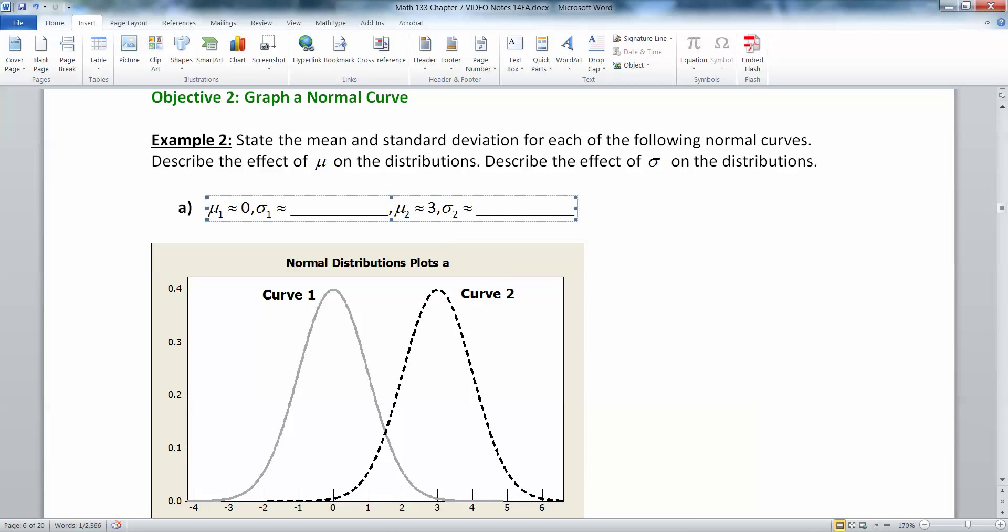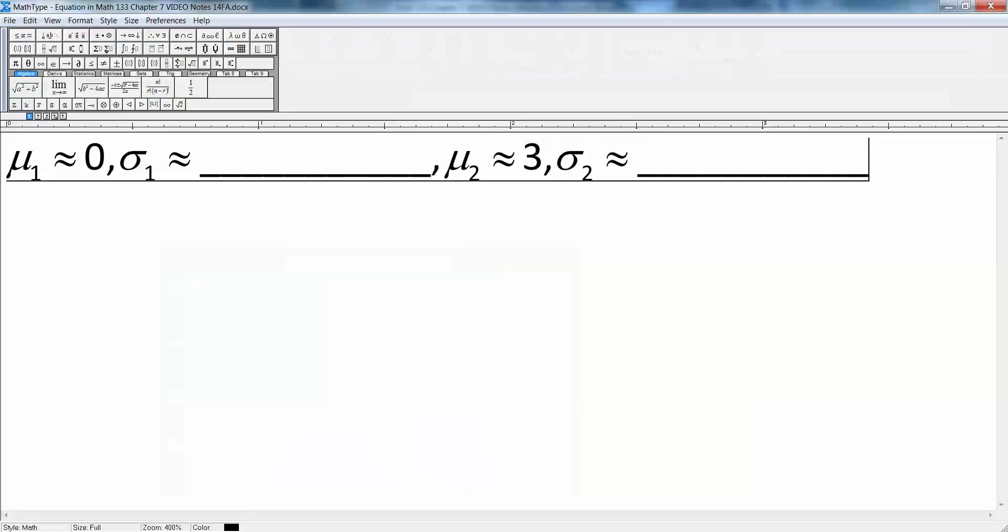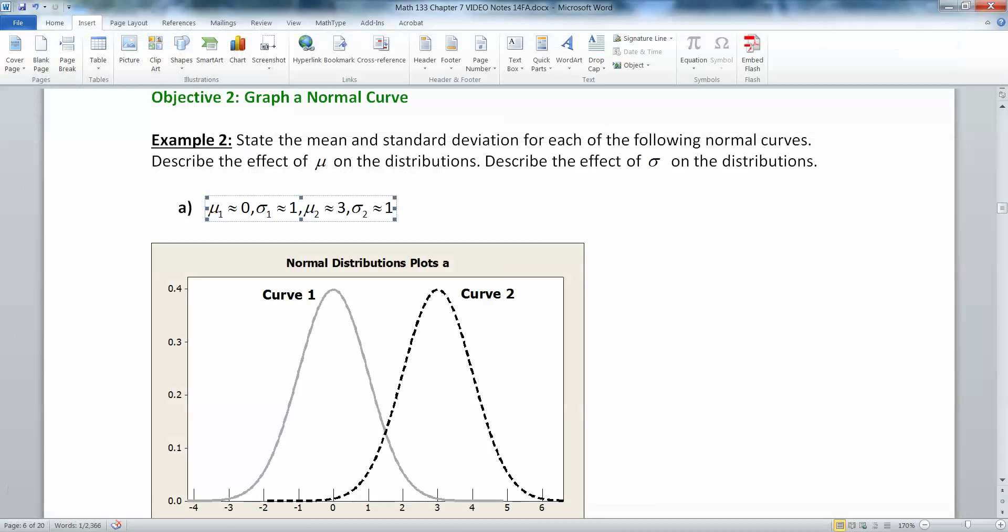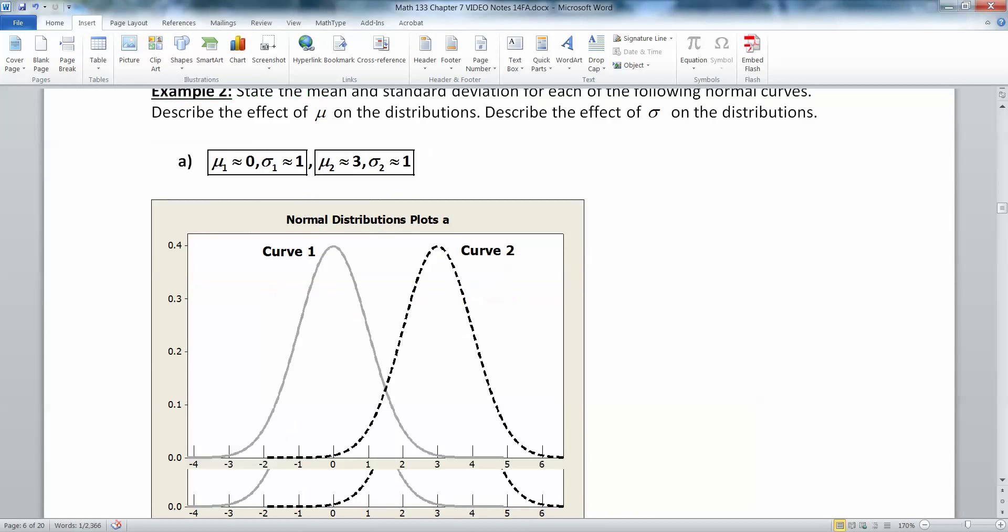Okay, what about standard deviations? Well, standard deviations is where the inflection point happens, which is about one away for both of these. So standard deviation is one for curve number one. It's actually one for curve number two as well. And there we have it.